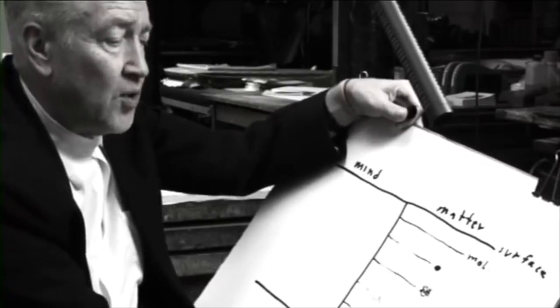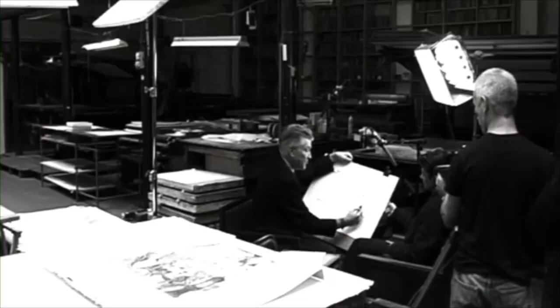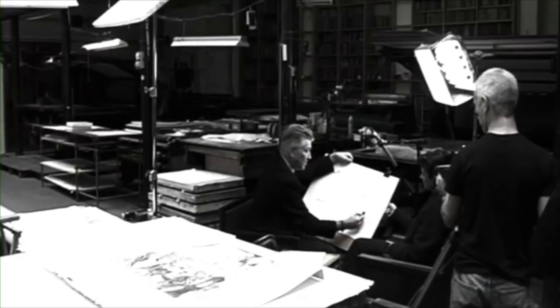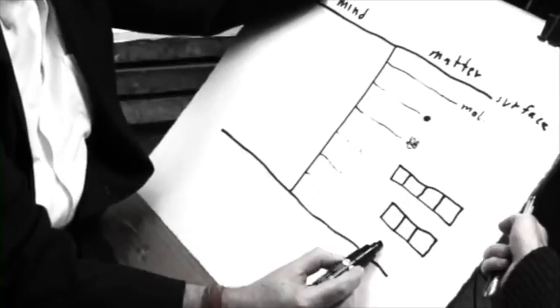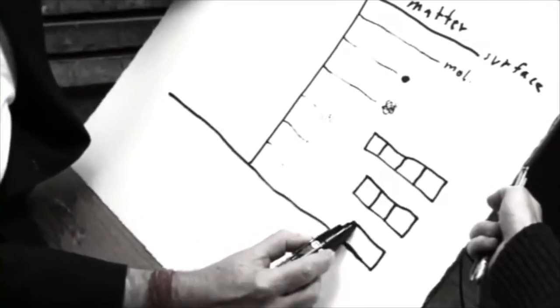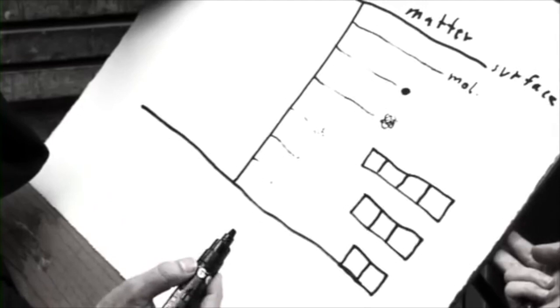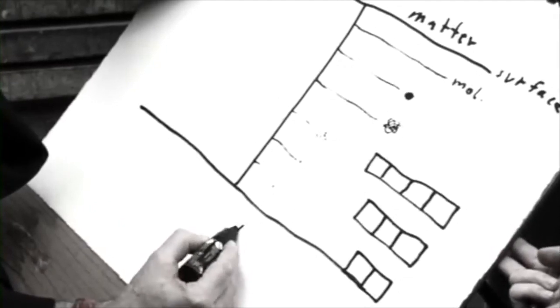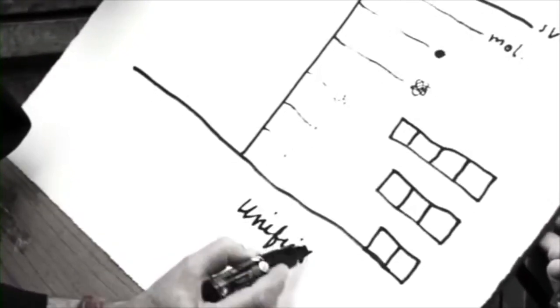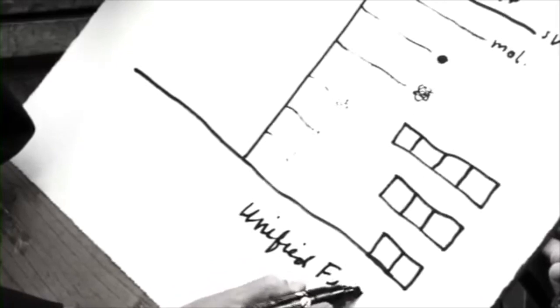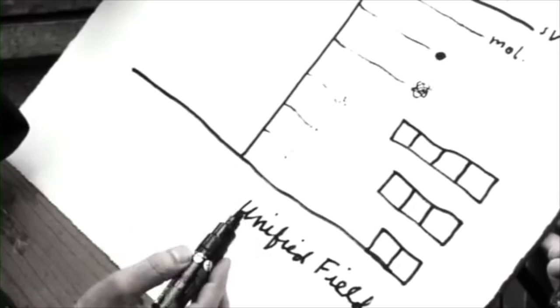They found four forces. On a deeper level, the four became three. And on a deeper level, the three became two. And then, about 30 years ago, modern science, quantum physics, discovered the unified field. The unity of all the particles and all the forces of matter, of creation.